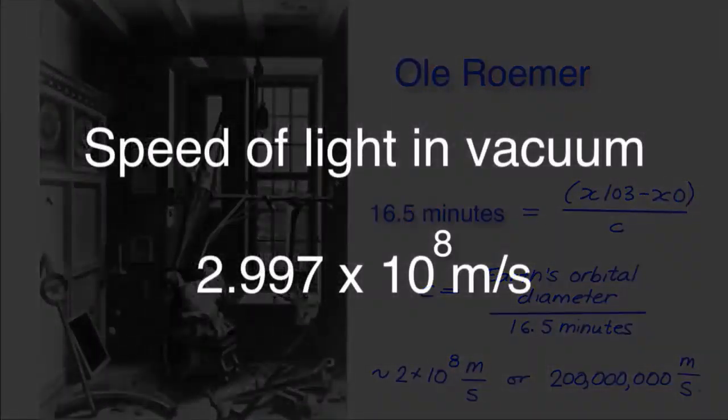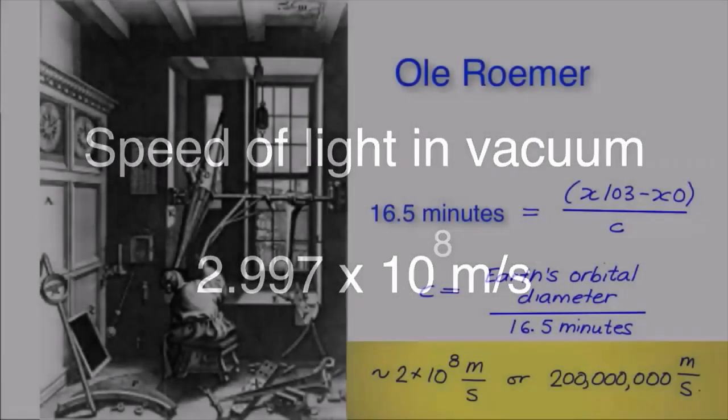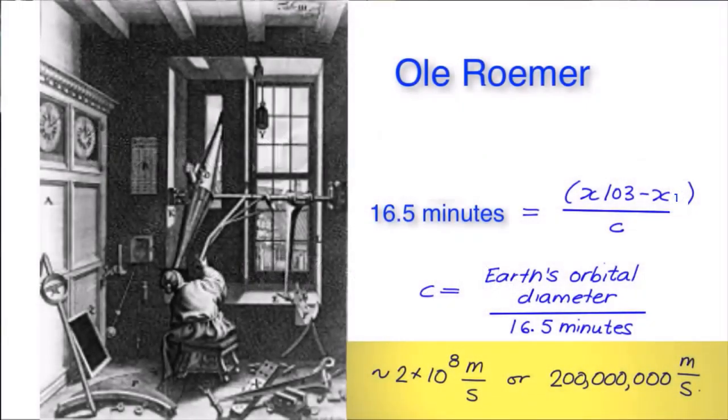Today, when physicists use the correct interplanetary distances, they find that the speed of light in space is 2.997 times 10 to the eighth meters per second. So Roemer was off in the 1670s by about 33%, but he did get the right order of magnitude for the speed of light, hundreds of millions of meters per second.